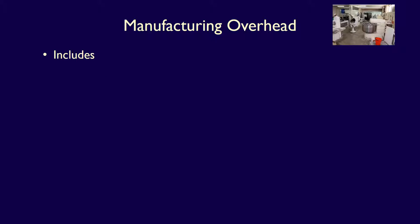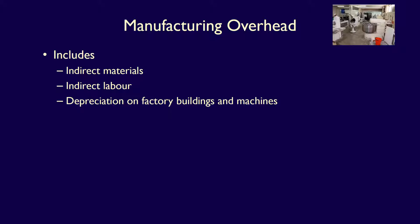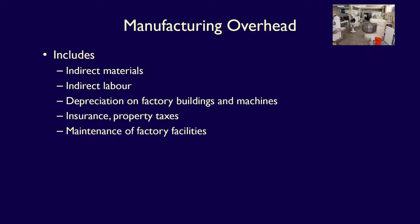What costs are included in manufacturing overhead? Raw materials that cannot be easily associated with the finished product, called indirect materials. Labour which cannot be easily associated with the finished product, called indirect labour. Depreciation on factory buildings and machines. Insurance on the factory and property taxes incurred on the factory. The cost of maintenance for the factory facilities. Supervisor salaries, because their work cannot be traced to any one product. Equipment lease or rental costs, and the list goes on. Basically, if the cost is manufacturing related but cannot be classified as direct materials or direct labour, it should be classified as manufacturing overhead.